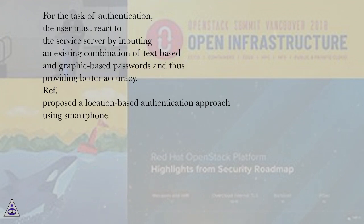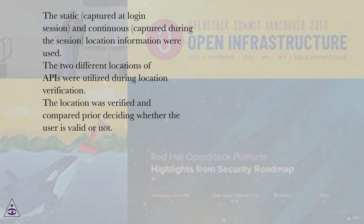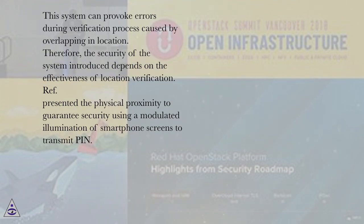A location-based authentication approach using a smartphone was also proposed. Static location information, captured at login session, and continuous location information, captured during the session, were both used. Two different location APIs were utilized during location verification. The location was verified and compared before deciding whether the user is valid. However, this system can provoke errors during verification caused by overlapping in location, so its security depends on the effectiveness of location verification.